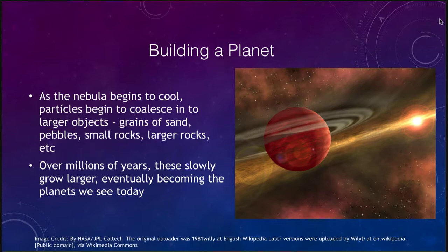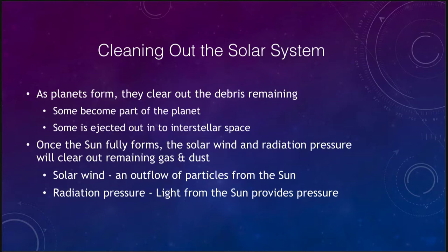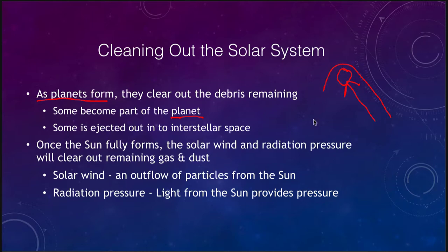We also need to account for cleaning up the solar system, since not many planetesimals are left today. As the planets are forming, some of the leftover debris actually becomes part of the planet — gravitationally pulled in, impacting it, causing the planet to grow. But some of it is ejected out into space: an object might come close to a planet, not quite hit it, and get kicked out of the solar system entirely with a lot of velocity. This is how the planets cleaned out the debris that remained after initial formation, and clearing its region of debris is one of the requirements for an object to be classified as a planet.